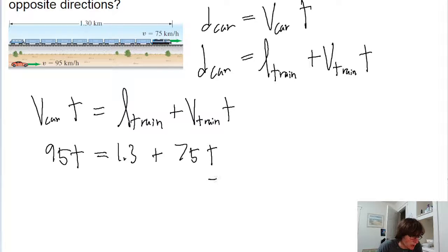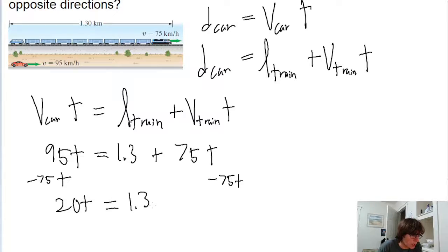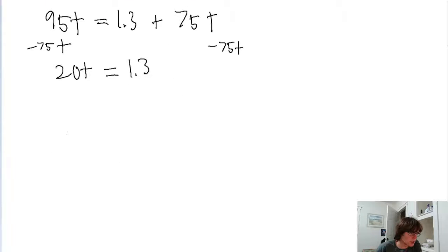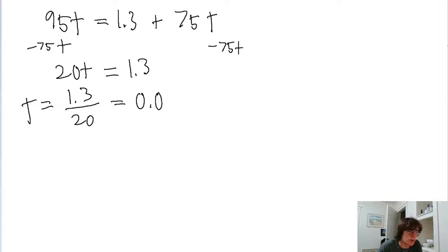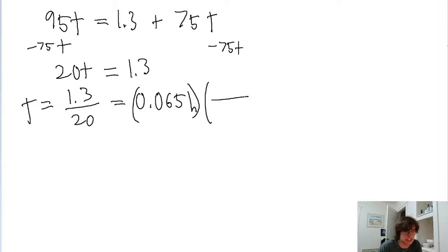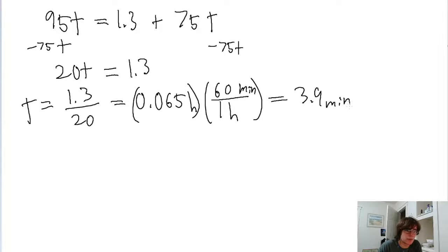To solve for t, subtract 75t from both sides of the equation. You end up with 20t on the left-hand side equals 1.3. Then divide both sides by 20, giving t equals 1.3 divided by 20, which is 0.065 hours. We can convert that into minutes by multiplying by 60, which gives us 3.9 minutes. That answers the first part of the problem.